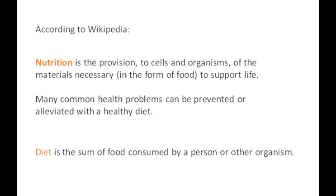What do the words diet and nutrition mean? If you just go to Wikipedia, according to Wikipedia, nutrition is the provision to cells and organisms of the materials necessary in the form of food to support life. So nutrition is the provision — for you as an organism, it's what's provided to you that is necessary to support your life. The word diet is related to nutrition. Diet is the sum of the food consumed by a person or other organism.